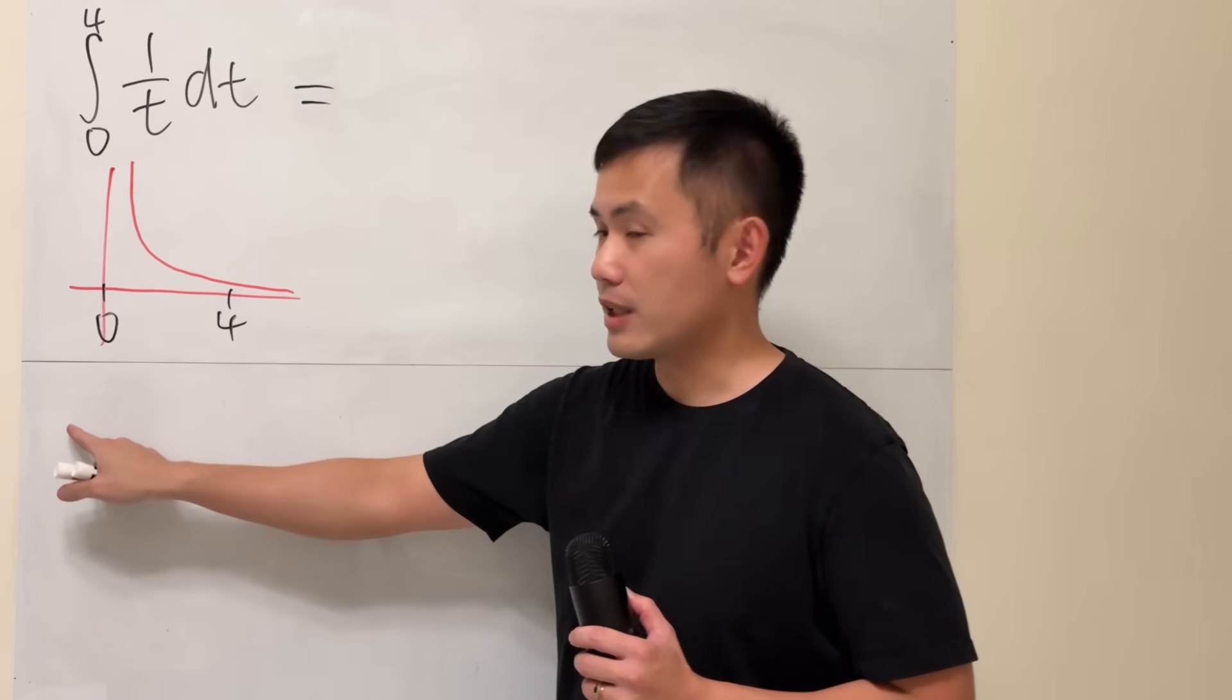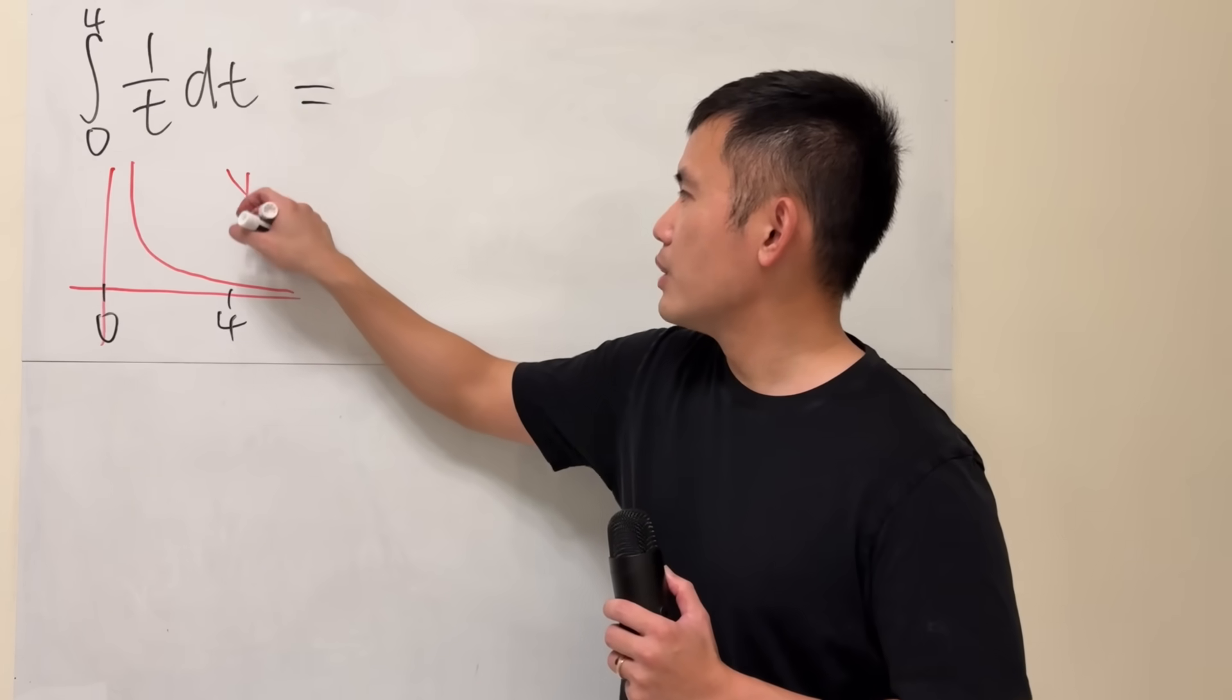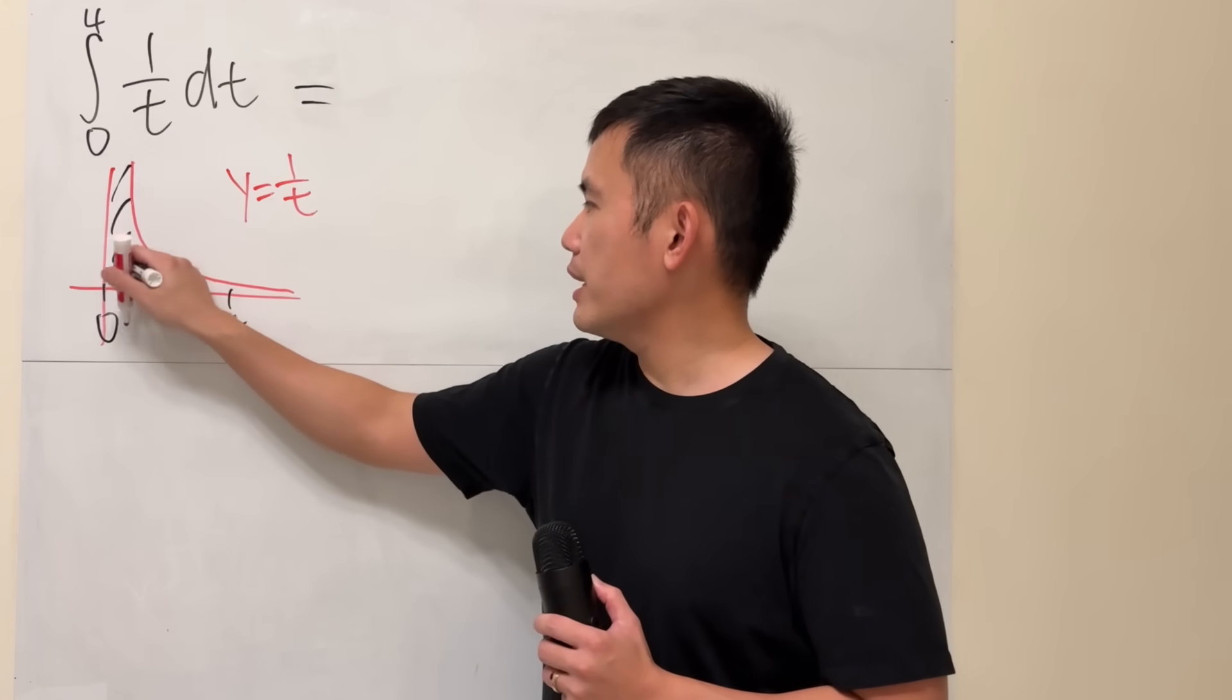And remember, there's another portion here. And interpret this as the area under the curve. This is y equals 1 over t. We want this area here.